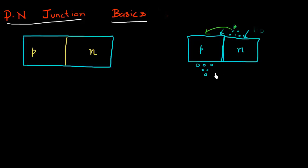Similarly, if I think in terms of holes — there are a lot of holes present in the P type semiconductor, while there are way fewer holes in the N type semiconductor. So these holes want to jump over to the N type semiconductor, where they think they'll be valued more. This results in an immediate exchange of carriers: electrons go from N type to P type, and holes go from P type to N type semiconductor.